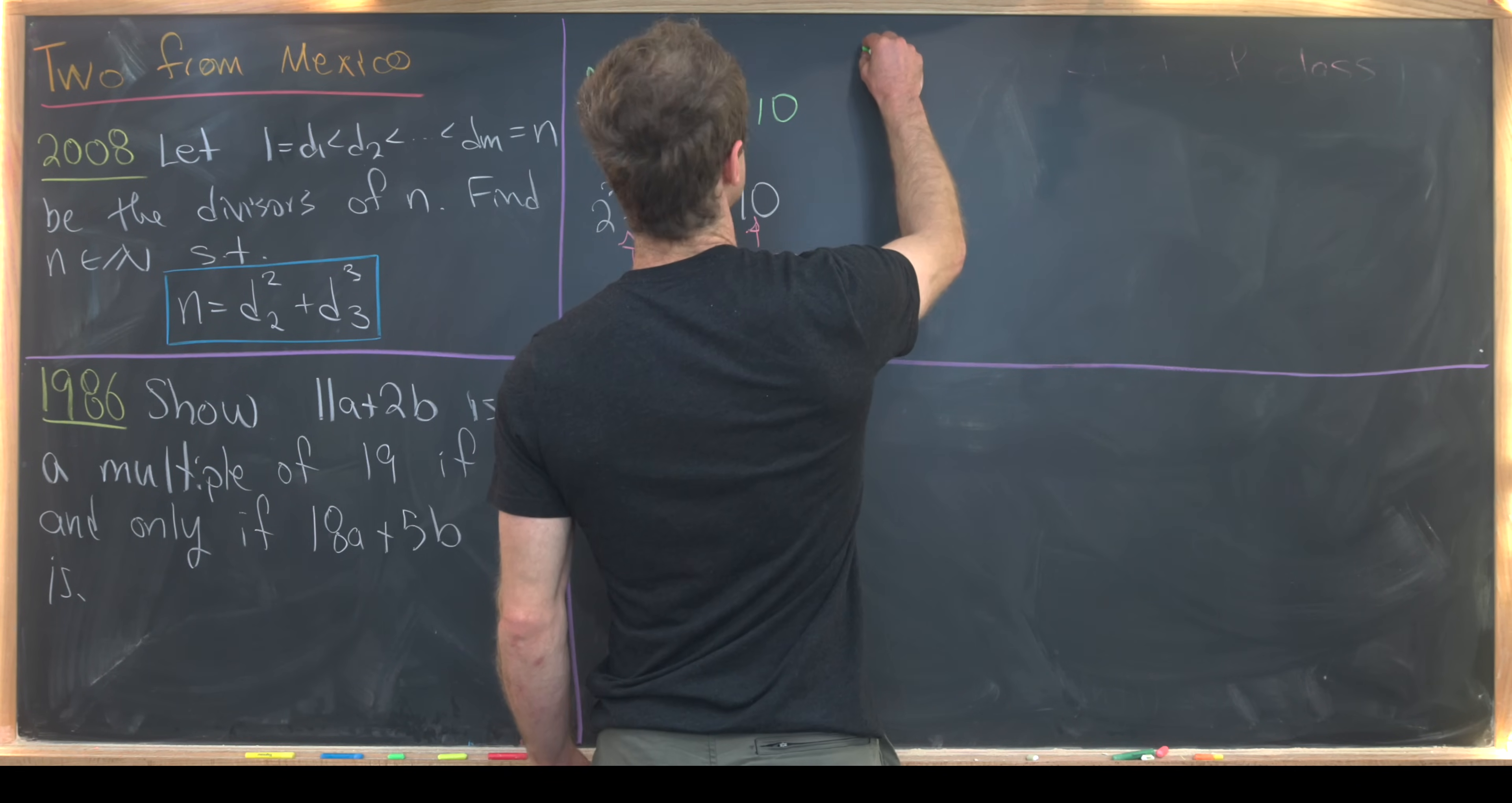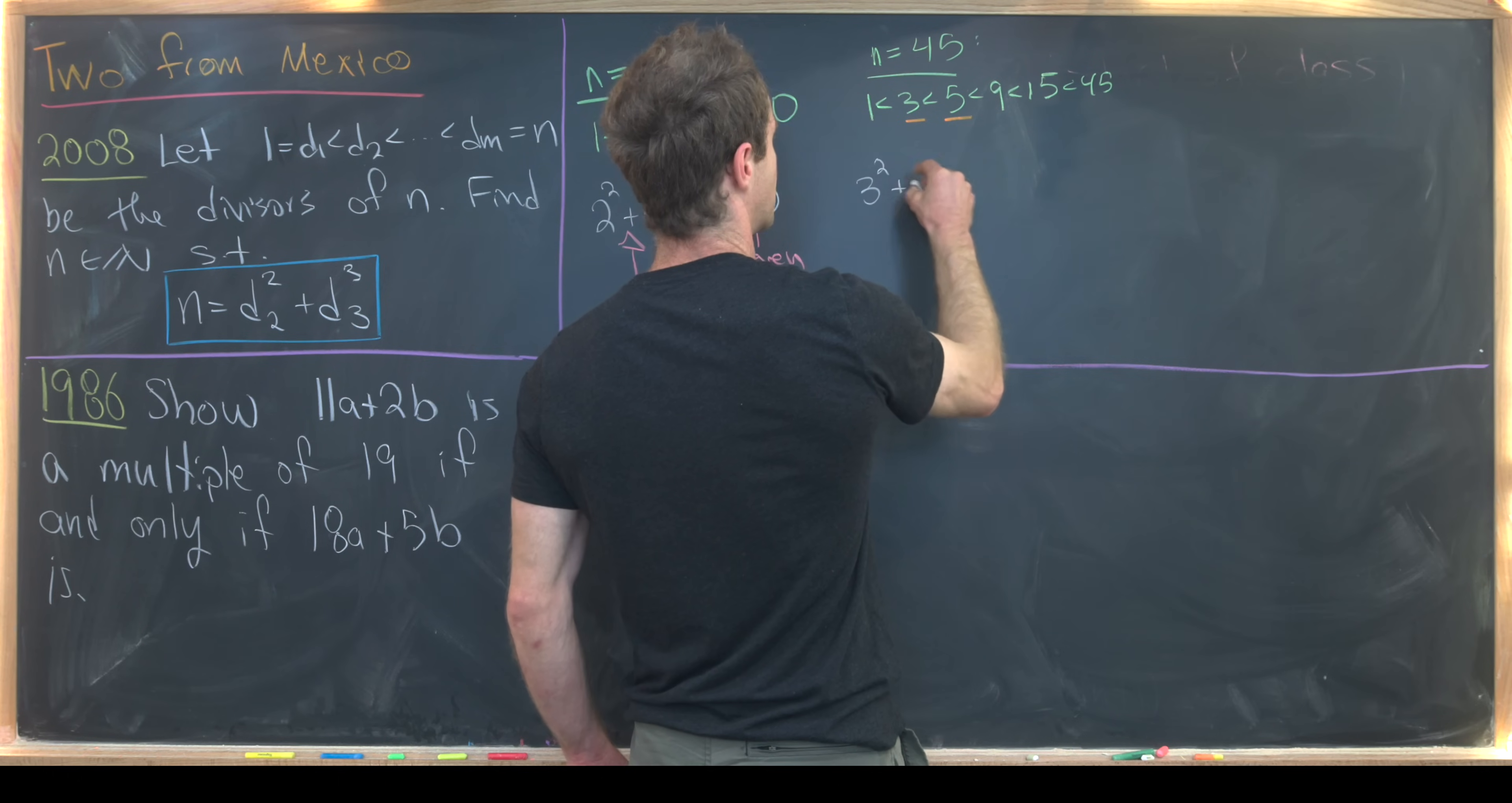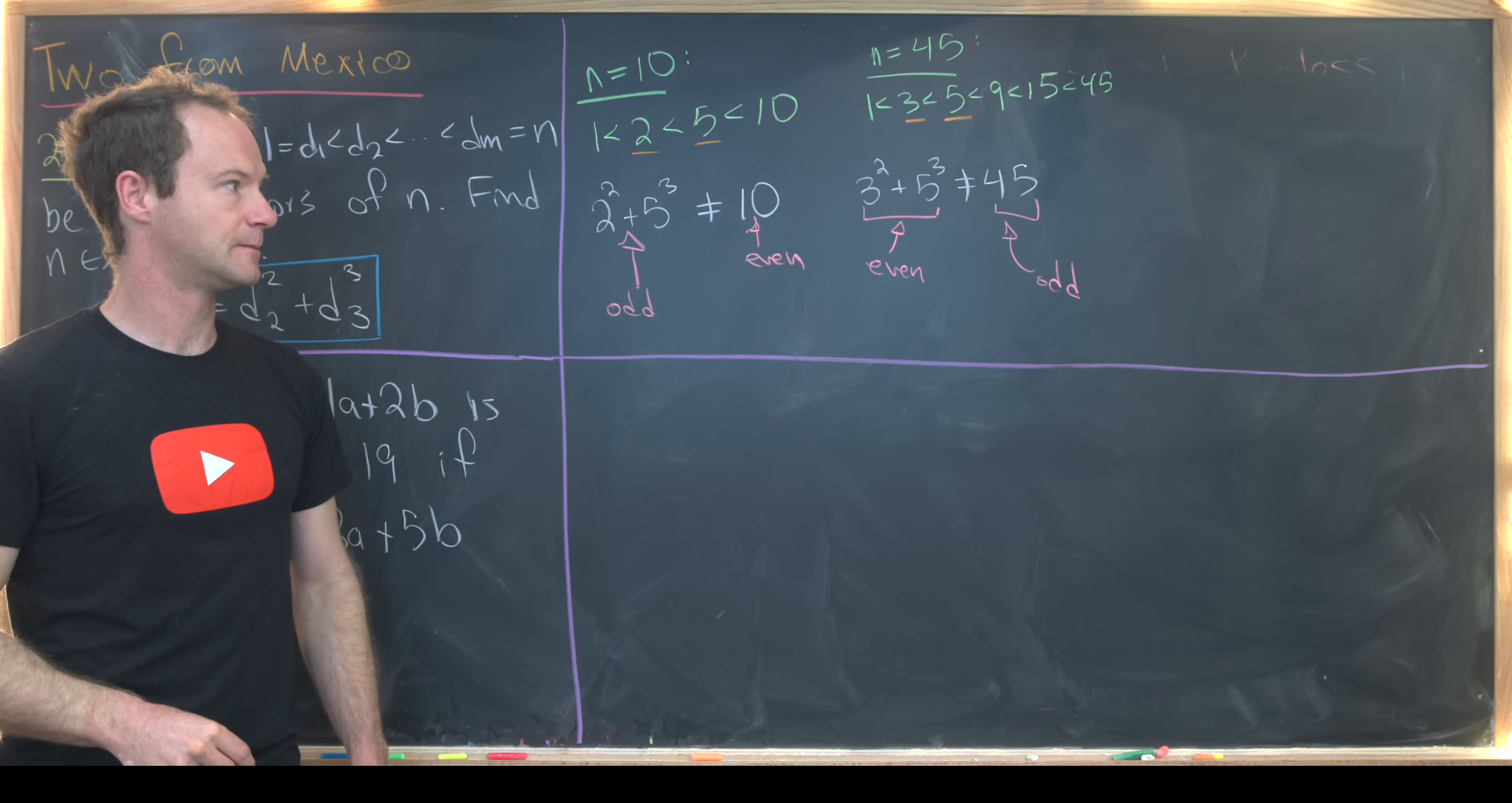So let's look at maybe another interesting case. Let's say we have N equals 45. So let's make a list of divisors there. We've got 1, 3, 5, 9, 15, and finally 45. So that's going to make D2 equal to 3 and D3 equal to 5. Now let's play the same game. We have 3 squared plus 5 cubed. Well, again, that's most definitely not equal to 45. It's much larger than 45. But I don't really want to pay attention to the fact that it's much larger. I want to pay attention to the fact that in this case, this guy is even and this guy is odd. And that's a problem. This thing's even because it's an odd plus an odd.